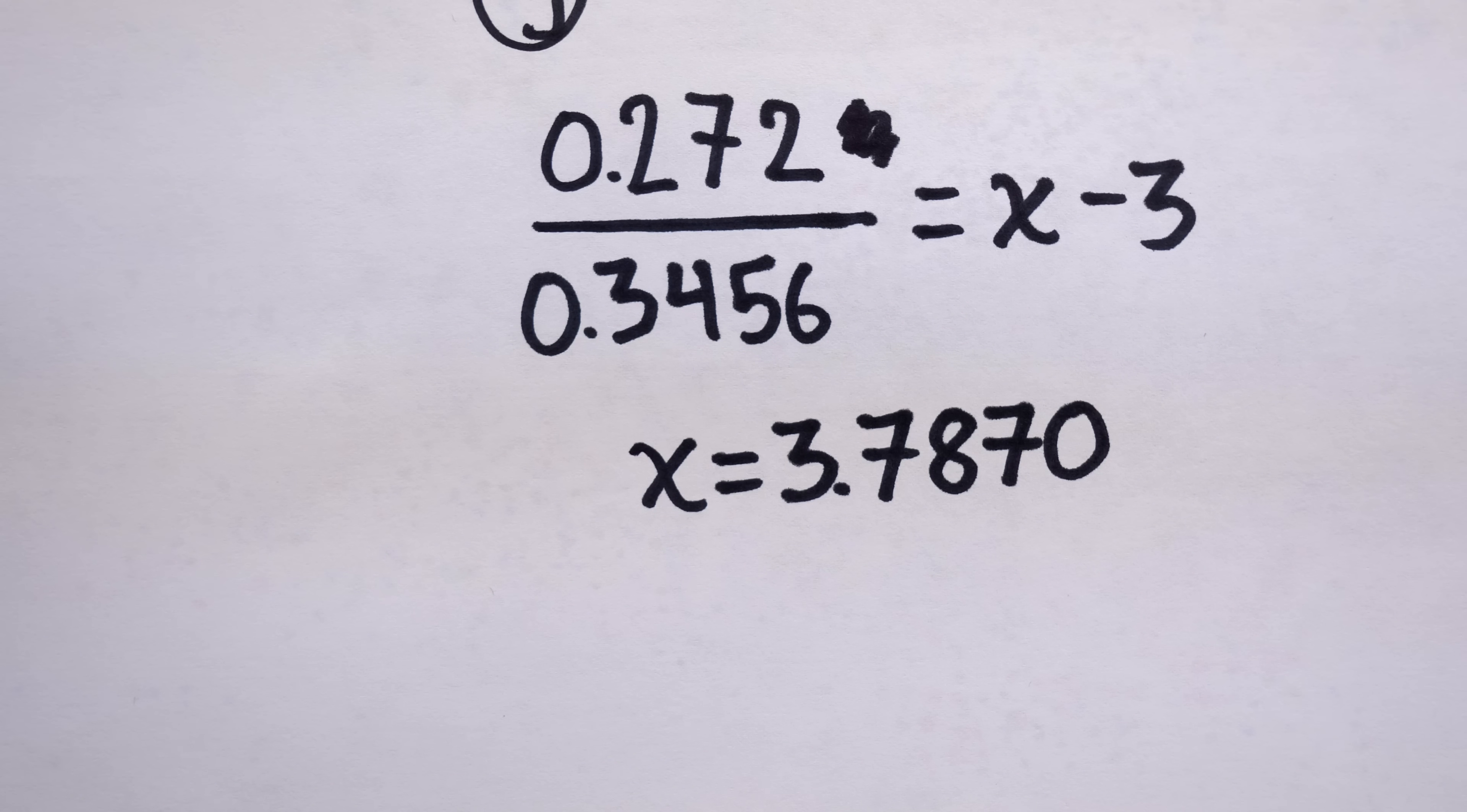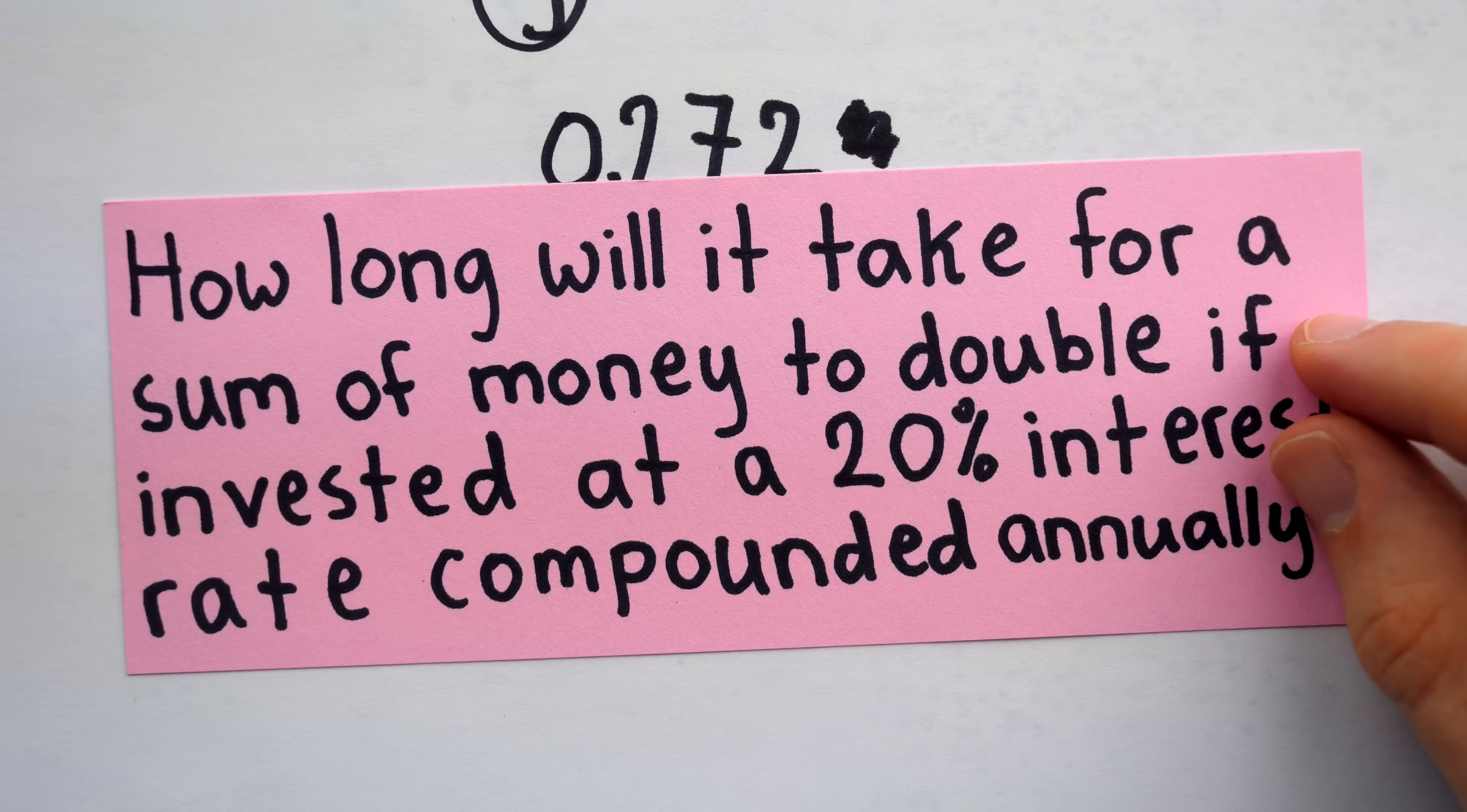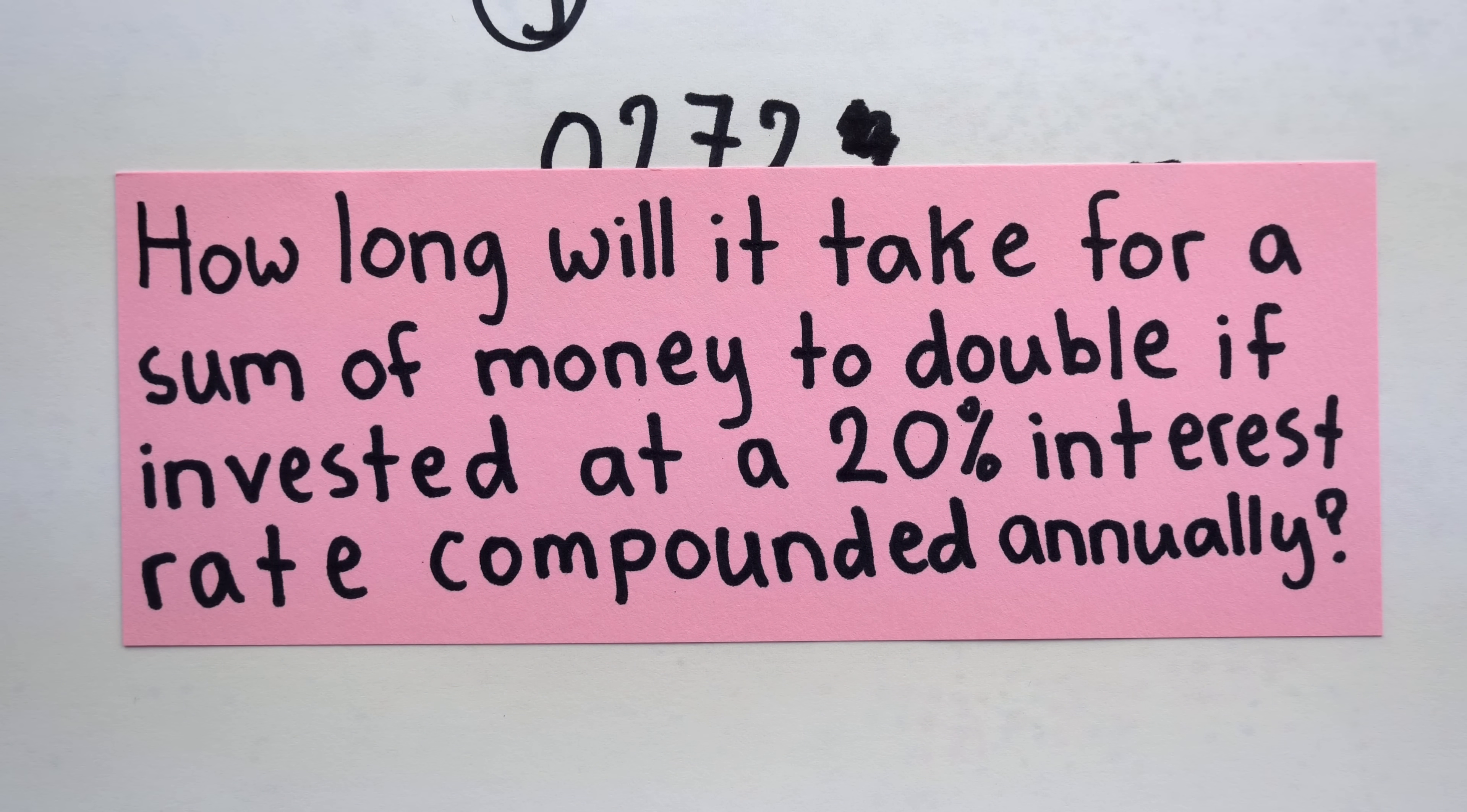And that's how the Babylonians found a solution with well under 1% error to this compound interest problem thousands of years before electronic calculators or logarithms.